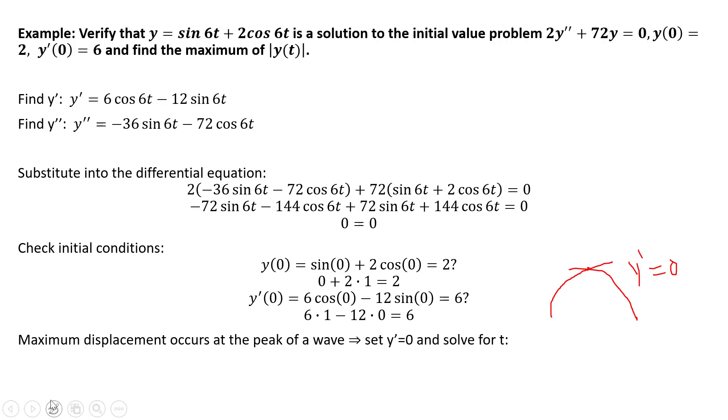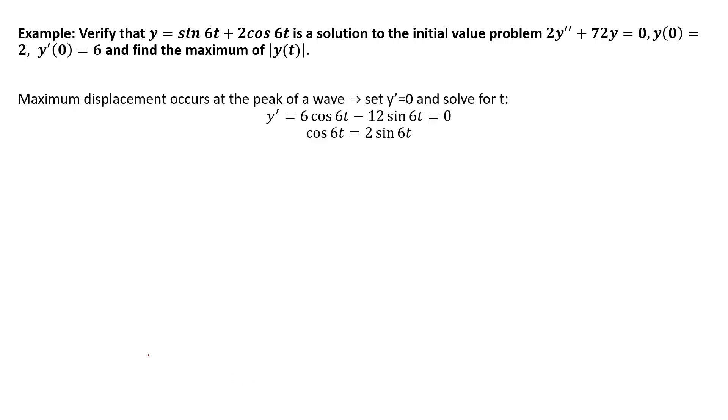So we set our derivative equal to 0 and solve for t. And so you have solving for t using some of your background from trig. And so then remember how to solve for the argument of a trig function. You're going to use inverse trig functions. And so t is 1/6 tan^(-1)(1/2).